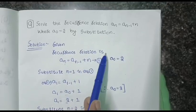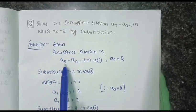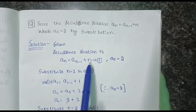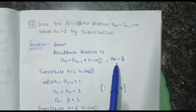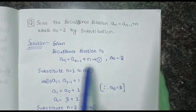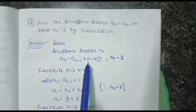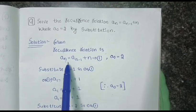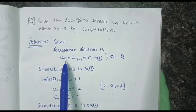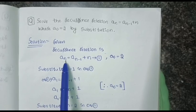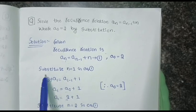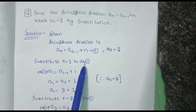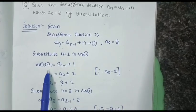The given recurrence relation is a_n = a_{n-1} + n, with a_0 = 2. This recurrence relation is treated as equation 1. In the substitution method, we substitute n = 1 to n. So we substitute n = 1 in equation 1.